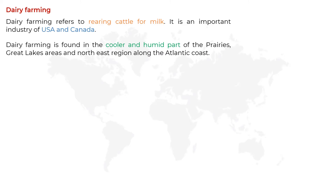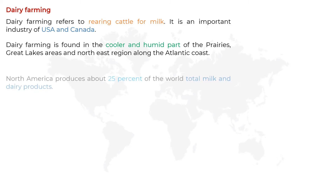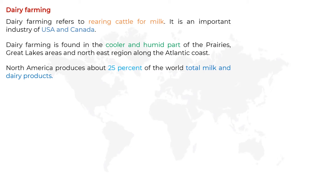Dairy farming is found in the cooler and humid part of the prairies, Great Lakes areas, and the northeast region along the Atlantic coast. Climate is a very important factor for dairy farming. North America produces about 25% of the world's total milk and dairy products.